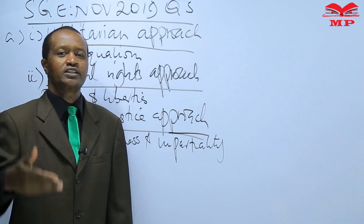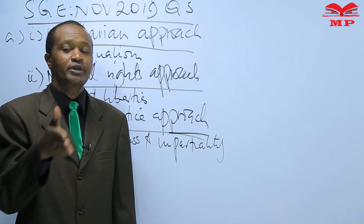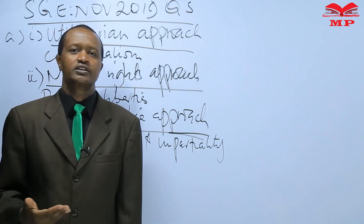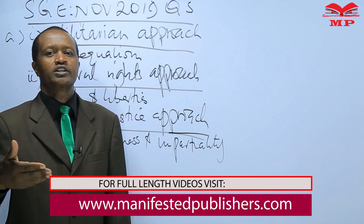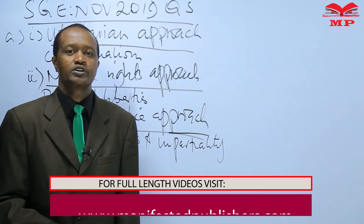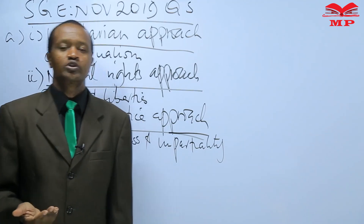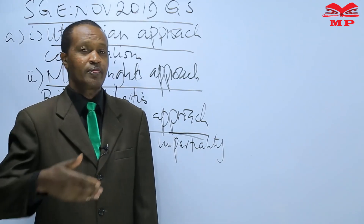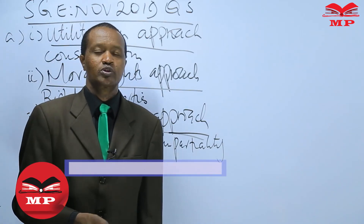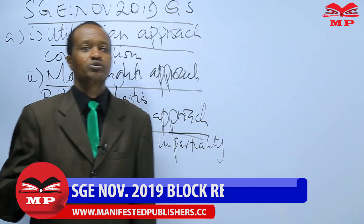Distributive justice requires that different treatment of people should not be based on arbitrary characteristics. People who differ in a substantive way — such as job skills or job responsibility — can be treated differently in proportion to those differences. As a manager dealing with employees, you should not treat all employees equally because some are skilled and others are not, and expectations should differ accordingly.